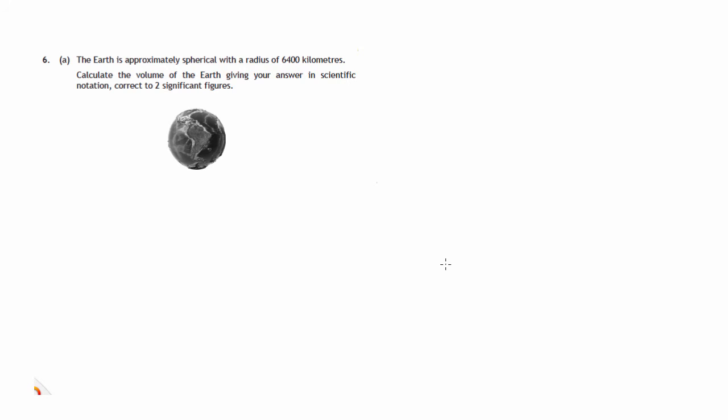This is question six from paper two of the 2015 National 5 SQA maths exam. We're told that the earth can be approximated as a sphere and we're given its radius and we're asked to calculate its volume correct to two significant figures.